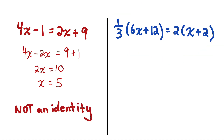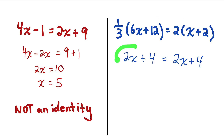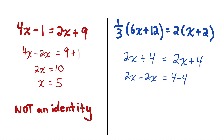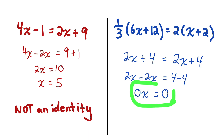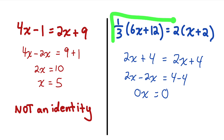But if we were to solve this other equation, I would start by distributing the one third and distributing the two. You should see now that the left side and the right side of the equation look exactly the same. Which means no matter what I substituted in for x, the left and right sides would be equal. If you tried to keep solving, bringing variable terms left and constants right, you would see 0 times x equals 0. And 0 times anything is equal to 0, which means there are an infinite number of solutions. So that equation is an identity.